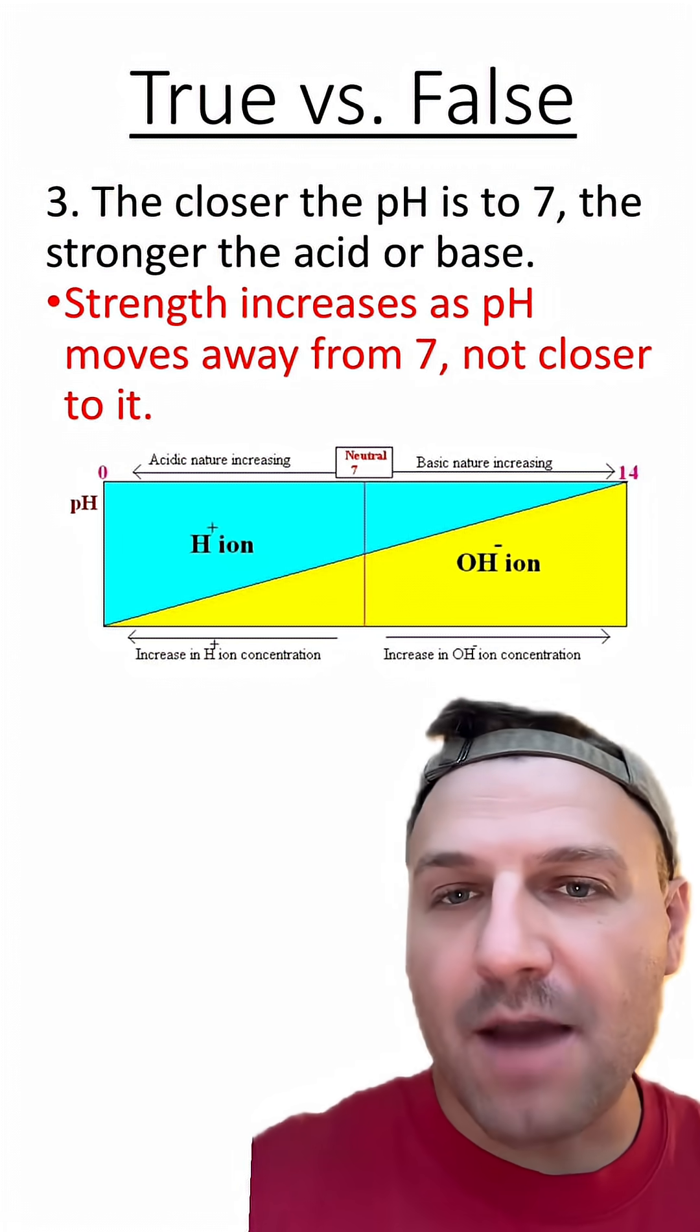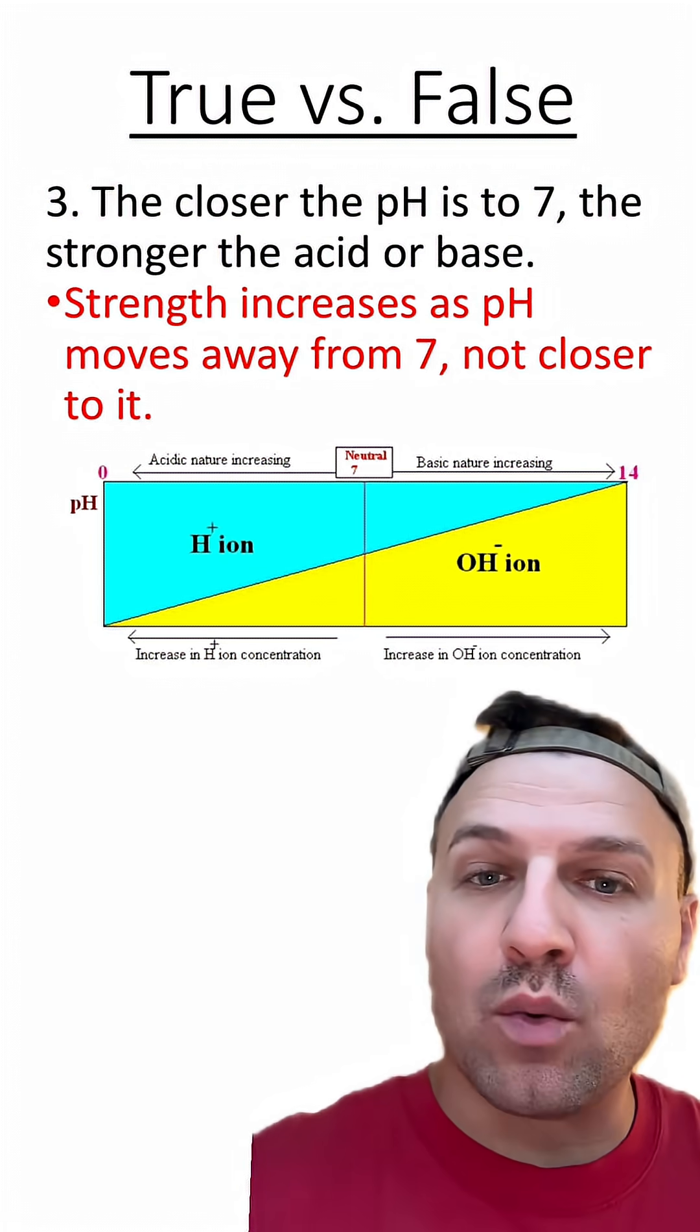Number three is false because it's the opposite. As you move further away from 7, you become more acidic or more basic.